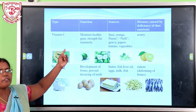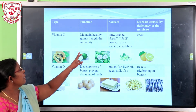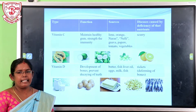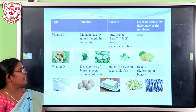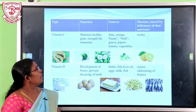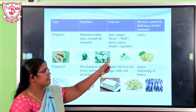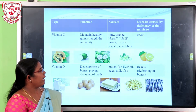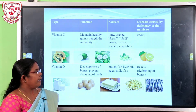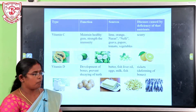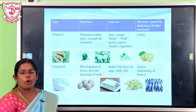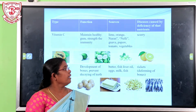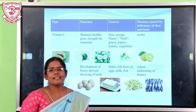Vitamin C functions to maintain healthy gums and strengthen immunity. Sources of Vitamin C include lime, orange, lemon, cauliflower, pepper, tomato, and vegetables. The disease caused by deficiency of Vitamin C is scurvy.